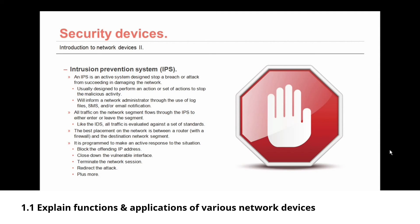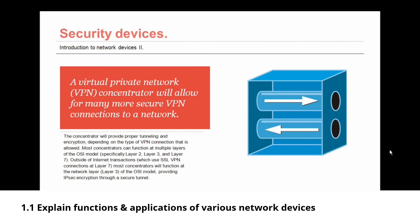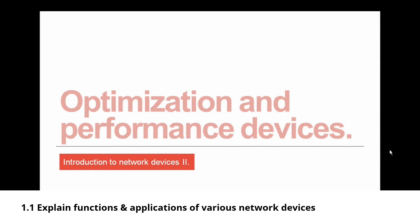Let's move on to the virtual private network concentrator — the VPN concentrator. This allows for many secure VPN connections to a network. The concentrator provides proper tunneling and encryption depending upon the type of VPN connection allowed. Most concentrators can function at multiple layers of the OSI model — specifically layer 2, layer 3, and layer 7. Outside of internet transactions which use an SSL VPN connection at layer 7, most concentrators function at the network layer — layer 3 — providing IPsec encryption through a secure tunnel.